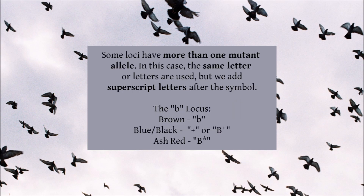The base colours make for a useful example here, because there are three of them: a wild type — blue; an allele that is recessive to wild type — brown; and an allele that is dominant to wild type — ash red. The base colour series will have its own in-depth video in the future, where I'll explain their names, why blue is sometimes called black, and why the colours are important, but for now we will just use them to understand notation.